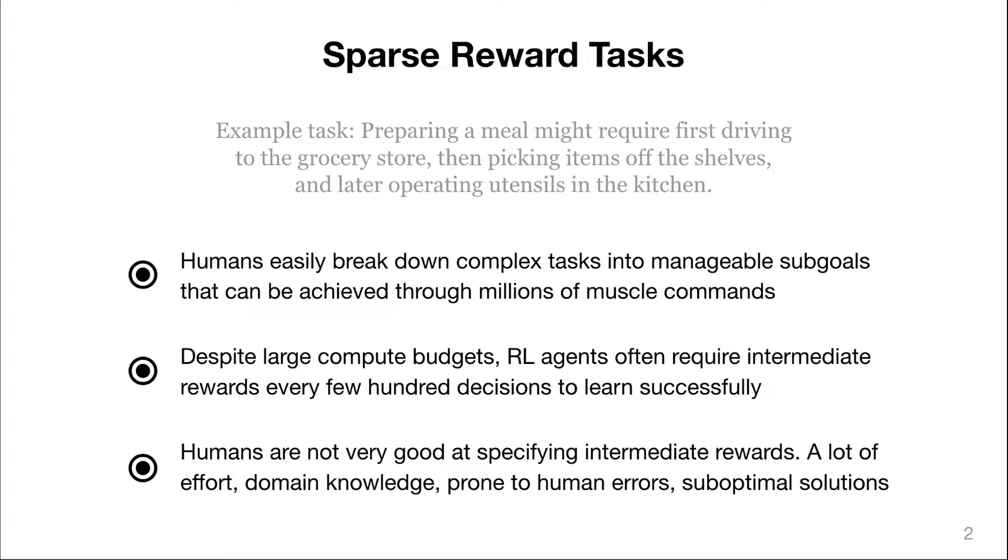One of the key challenges in reinforcement learning is to solve tasks with sparse rewards. For example, let's consider a robot that's supposed to prepare a meal for us, but for that it first has to drive to the grocery store and pick items off the shelves and then move all the way back to the kitchen and start operating with utensils and then bring the meal to us.